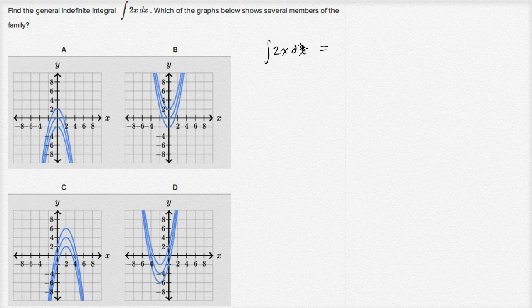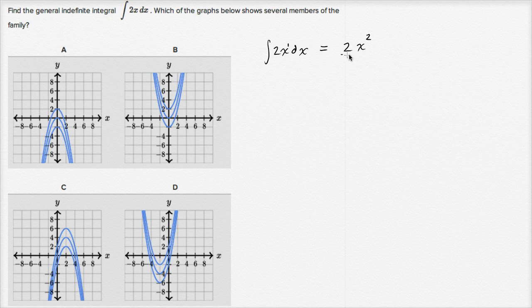Well, it's going to be two x to the second power, because this was two x to the first power, so we increment the exponent to two, and then we divide by that newly incremented exponent. So this is going to be x squared.